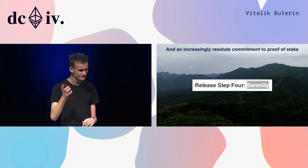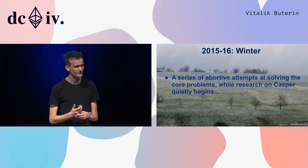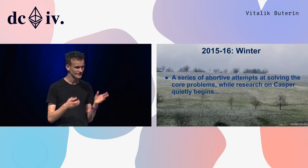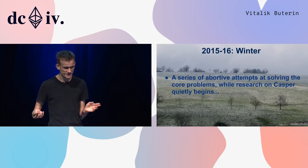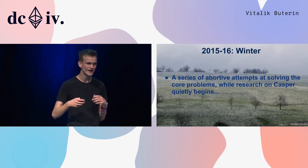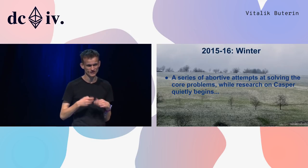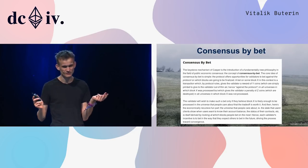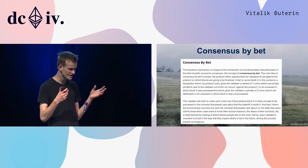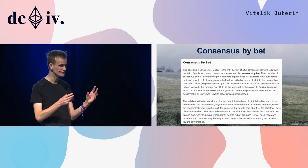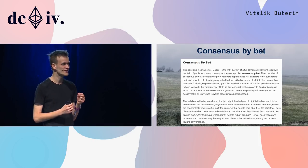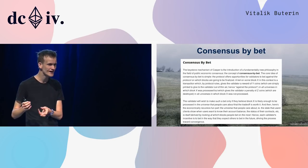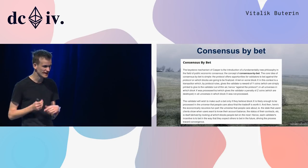After this came a bit of a winter — a bunch of abortive attempts at solving core problems in proof of stake and scalability. Research on Casper quietly began; Vlad began doing his work on Casper CBC. One of the first interesting ideas was 'consensus by bet': people would bet on which block becomes finalized next, and once more people bet on a block, that itself becomes information fed into other people's bets — a recursive formula where more and more people would bet more and more strongly on a block over time.